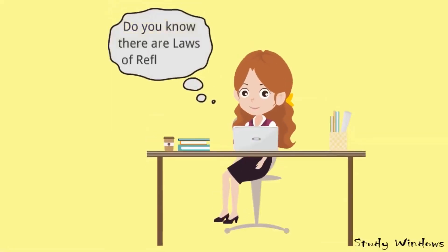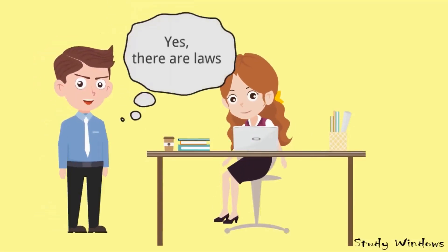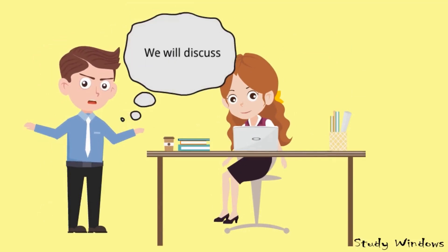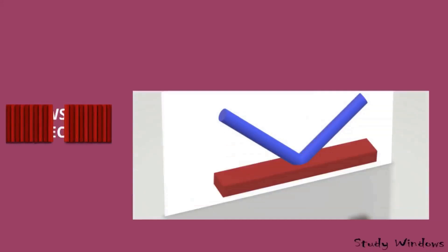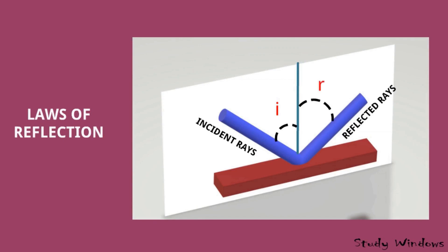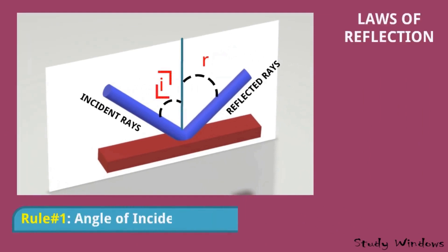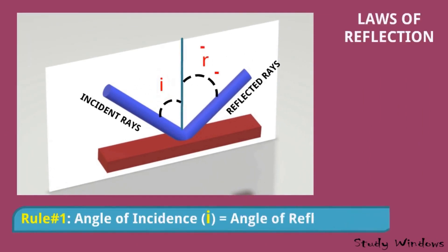There are laws of reflection. We will discuss all the laws in a simple way. This is the incident rays, this is the reflected rays, and this is the normal. This is the angle of incidence and this is the angle of reflection. As per the first law of reflection, the angle of incidence is equal to the angle of reflection — that is, I equals R.